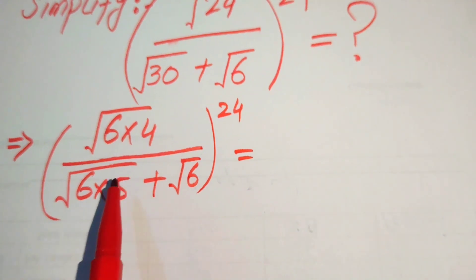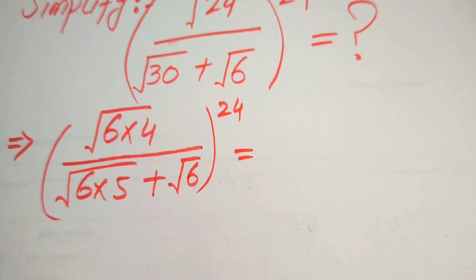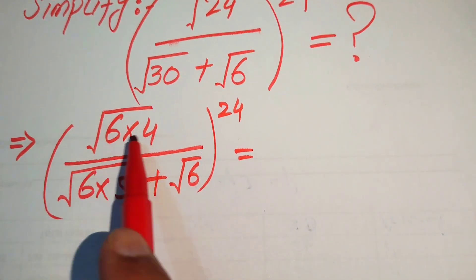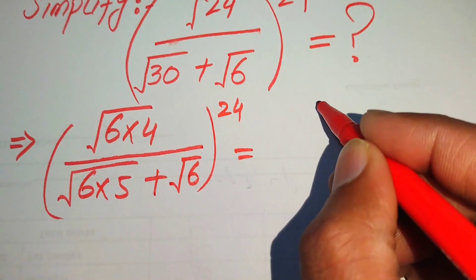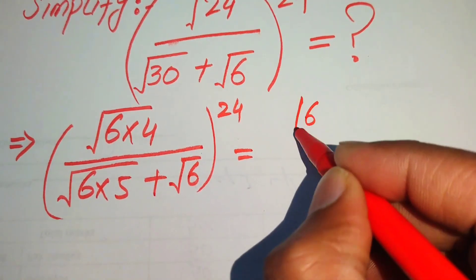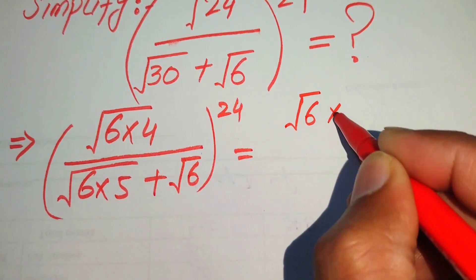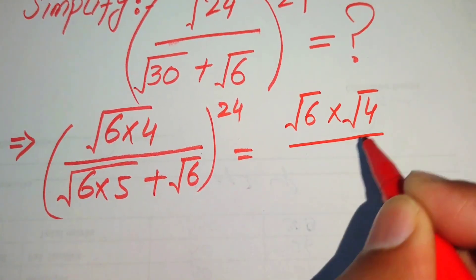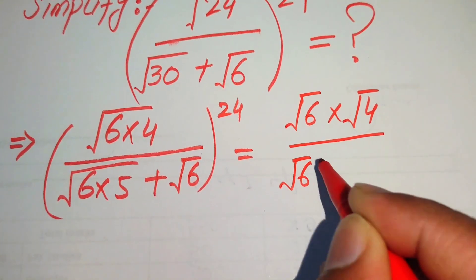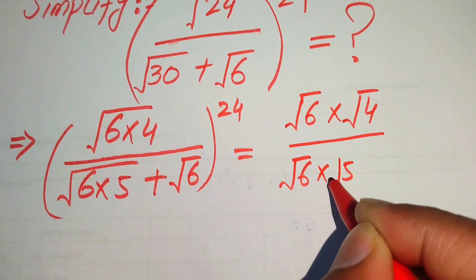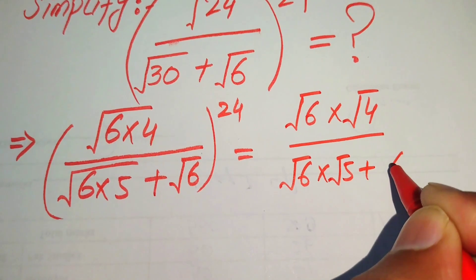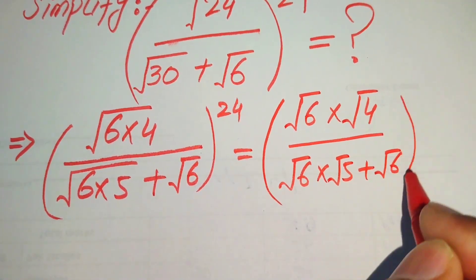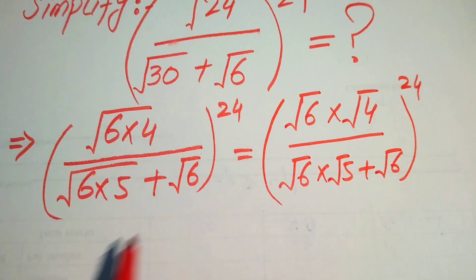In the next step we apply the radical law, separating the radical sign on both terms. It is written as square root of 6 multiplied by square root of 4, divided by square root of 6 multiplied by square root of 5, plus square root of 6, and the whole exponent is 24.